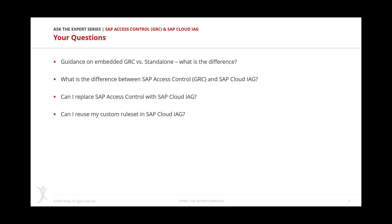With GRC 12.0, there's also a version called the embedded version, specifically for S/4HANA. From a functionality perspective, there's no difference — you have the same functionality in the embedded as in standalone. The only difference is that instead of having a separate system to run the GRC foundation on, you have it embedded in your S/4HANA environment. That saves hardware costs because you have a dedicated GRC landscape with dev, quality, and production. That cost can be absorbed into S/4HANA with the embedded approach.